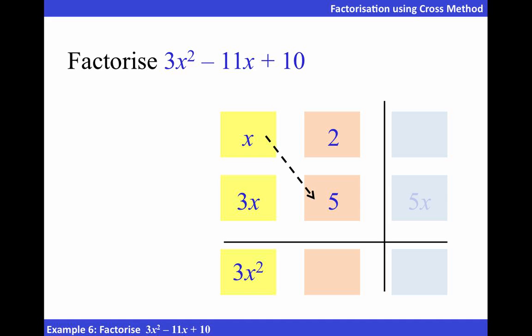Now, as we cross-multiply, we will get 6x and 5x. We know that the sum of these two terms should result in negative 11x as given in the original expression. To get negative 11x, it is only possible if both 6x and 5x are negative.